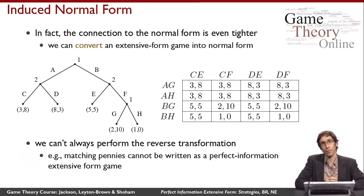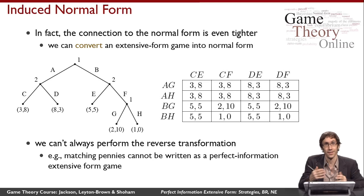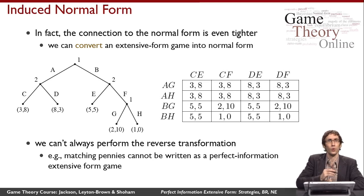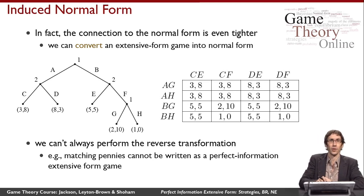An example is matching pennies. Intuitively, in matching pennies it's really important that the two players play simultaneously, and there's no way to represent that in a perfect information game — one player would have to move first, and the second player would get to see that move. So we shouldn't expect a transformation from matching pennies into a perfect information game; something would have to be lost.